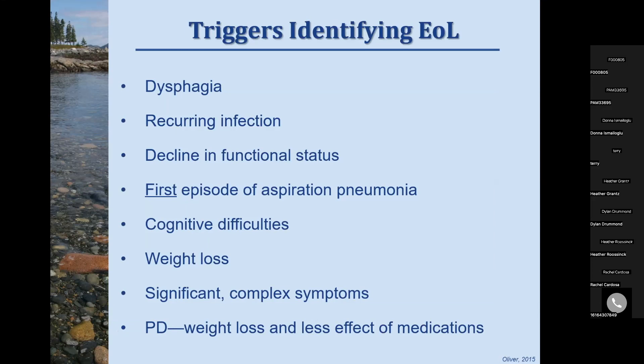When should we be talking about end of life for these patients? A key trigger is the first episode of aspiration pneumonia — usually far upstream, but typically the triggering event for cyclic re-hospitalizations and functional decline. Other important indicators to watch for include infection, dysphagia, decline in functional status, cognitive decline, and weight loss.